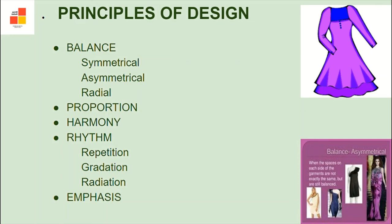Next, we talk about proportion. It is the relationship of parts of a garment to one another or to the whole garment, generally based on the golden mean, represented in the ratio of 3:5:8. There is also proportion of colors, meaning using colors in unequal amounts where one color emphasizes the garment line, affecting the proportion of an outfit.